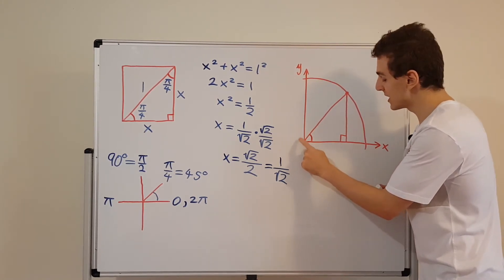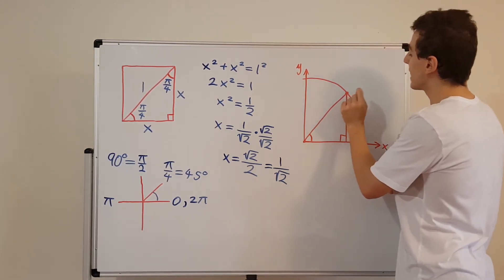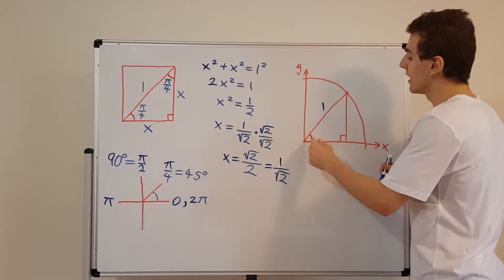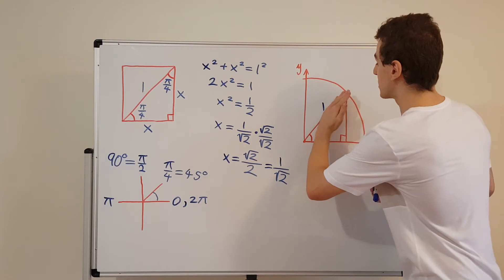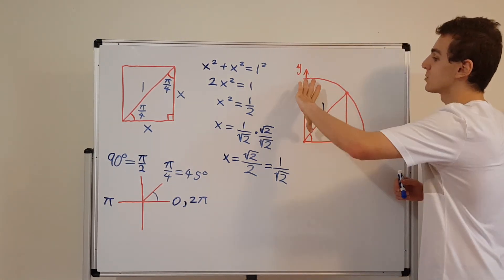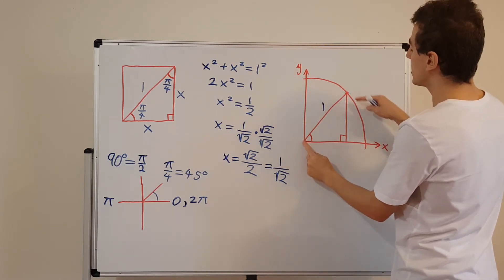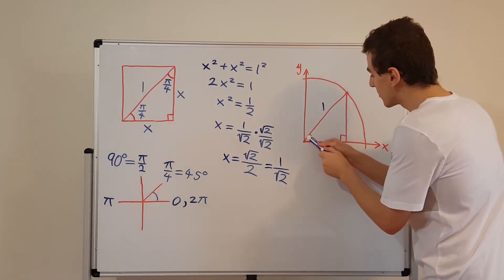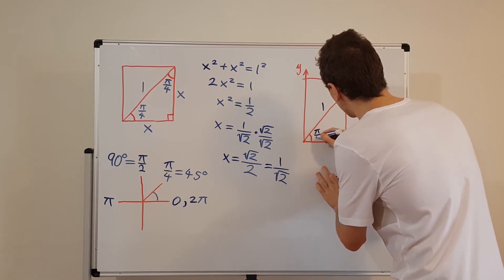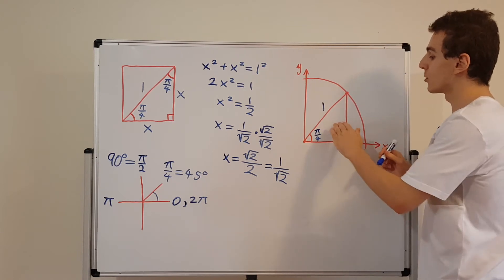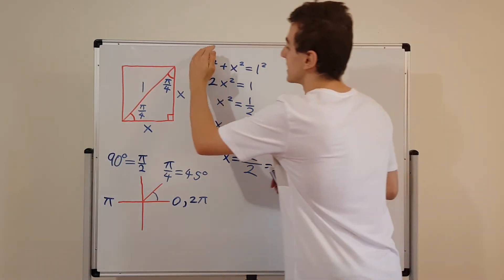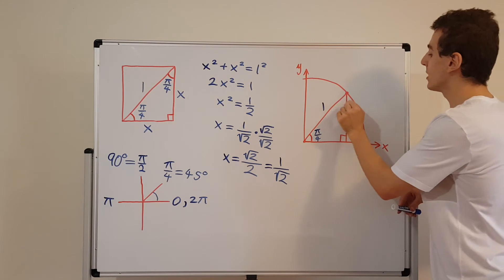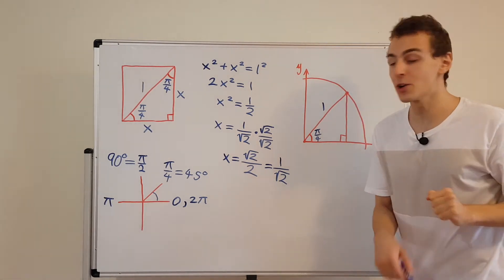That's because we've set the hypotenuse equal to 1, making it the radius of the circle. Every point on the circle is 1 unit away from the origin. We can conclude that this angle is pi on 4, because we embedded that triangle inside — it came from using the diagonal line to split the square's corner in 2. This triangle is actually going to tell us the cosine and sine of pi on 4, or 45 degrees.